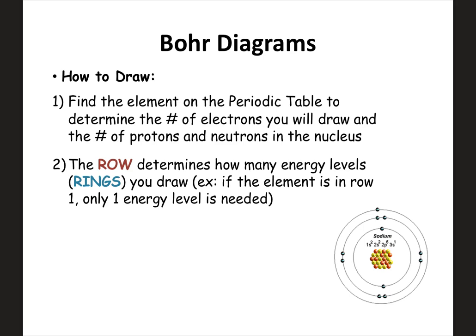The first thing you do for a Bohr diagram is find the element on the periodic table and figure out the number of electrons, protons, and neutrons. We've already gone over how to find the number of subatomic particles for any element. The row will determine how many energy levels or rings you draw. Whatever row that element is in, that's how many rings you draw. So if the element is in row number two, you would draw two rings.